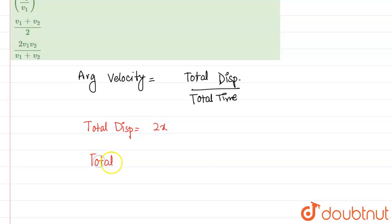And total time, if you see, total time will be equal to... basically this will be distance or you can say displacement upon speed. So basically this time is given by displacement upon speed.